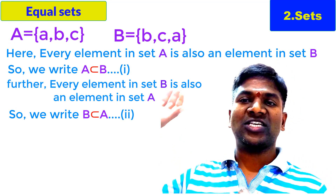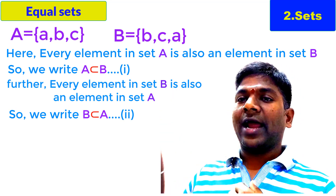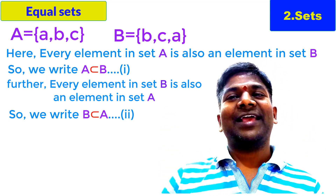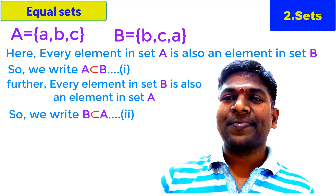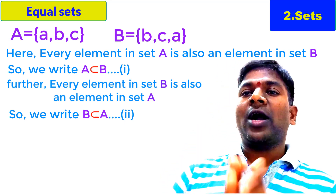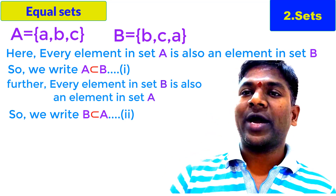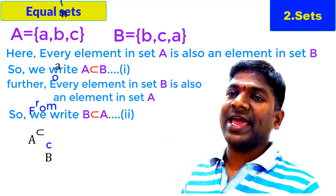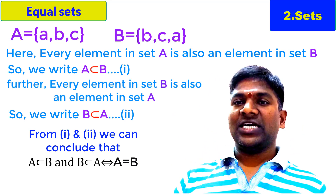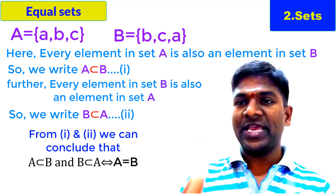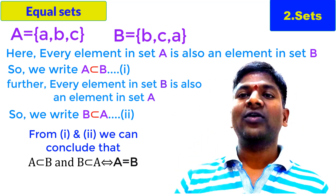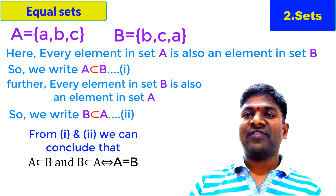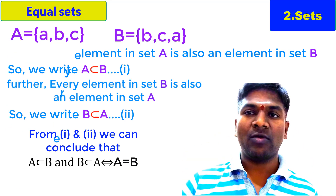What do you understand from these two conditions? All the elements of A are in B, and the second condition says all the elements of B are in A. Clearly, those two sets are equal. We already know the order of elements is not taken into consideration when we write sets. So from conditions one and two, we write A is equal to B. Two sets are said to be equal if and only if they are subsets of each other. A and B are equal sets if and only if A subset B and B subset A.